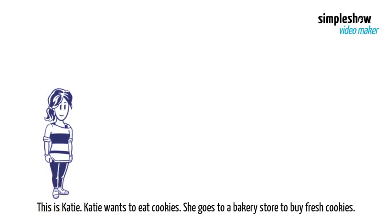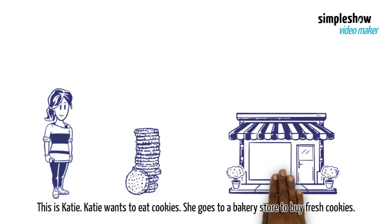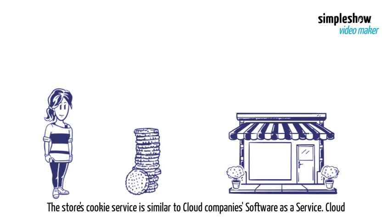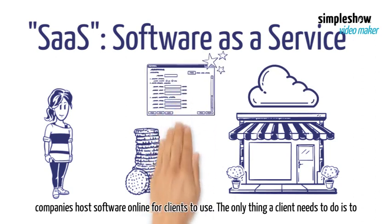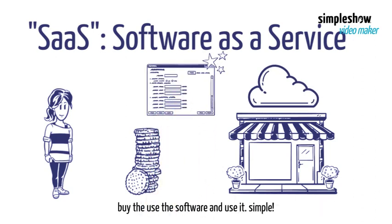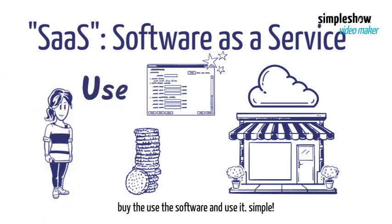This is Katie. Katie wants to eat cookies. She goes to a bakery store to buy fresh cookies. The store's cookie service is similar to cloud companies' software as a service. Cloud companies host software online for clients to use. The only thing a client needs to do is buy and use the software. Simple.